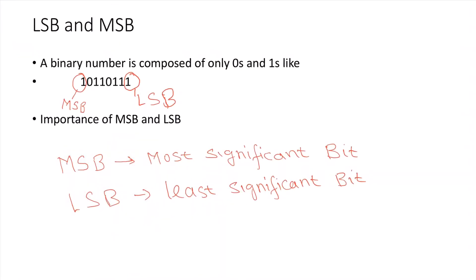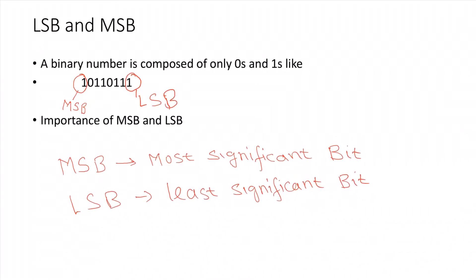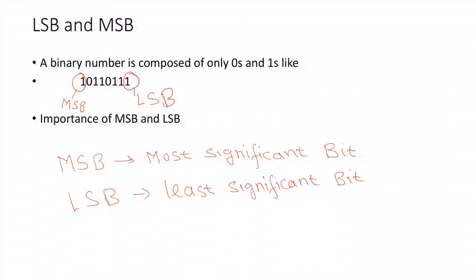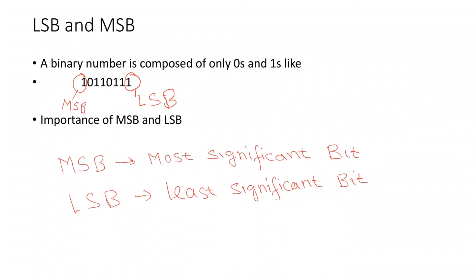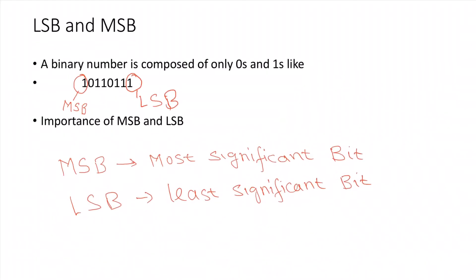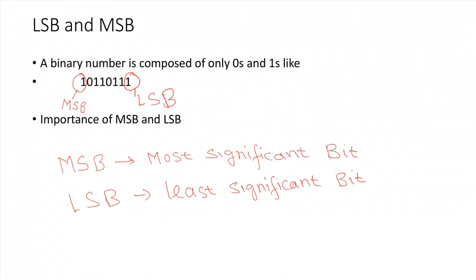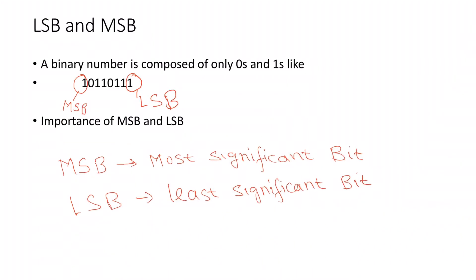This is an example of binary number system. As you can see, first bit is MSB and the last one is LSB. Now MSB and LSB has its own significance. To understand this, go through this video.